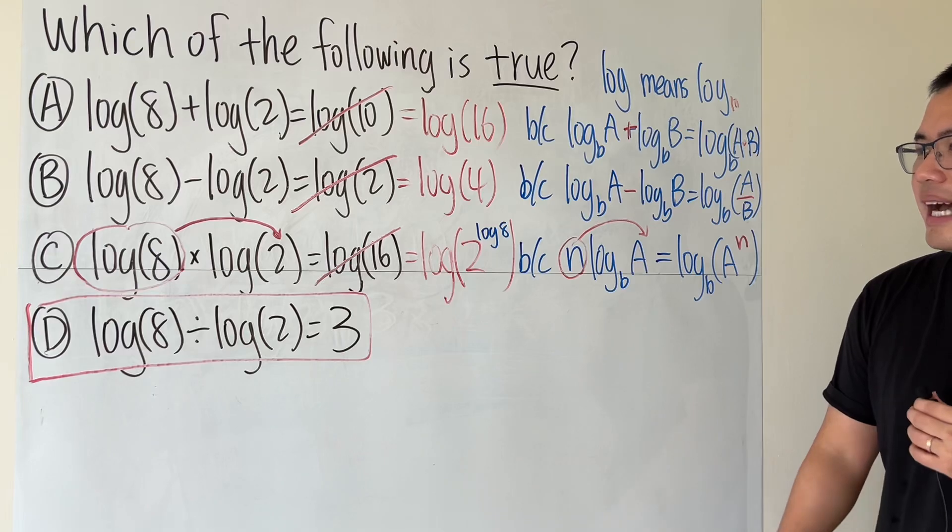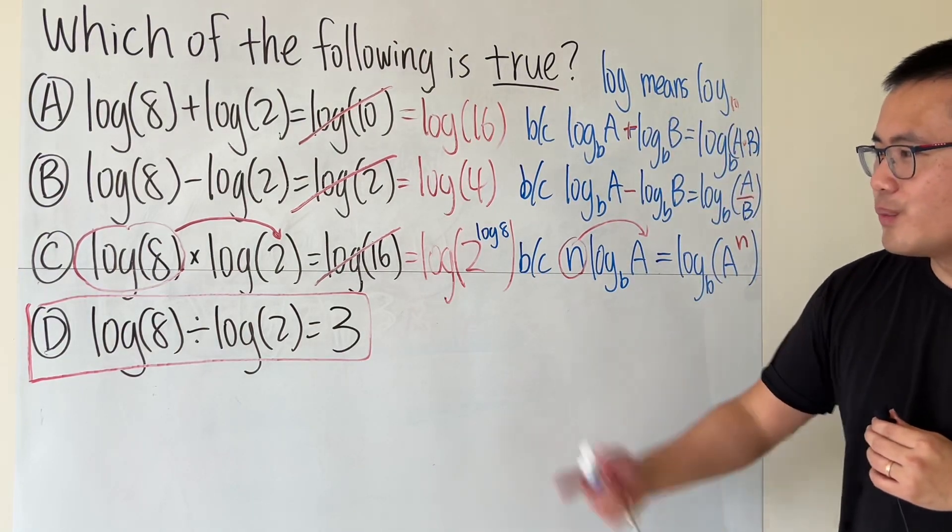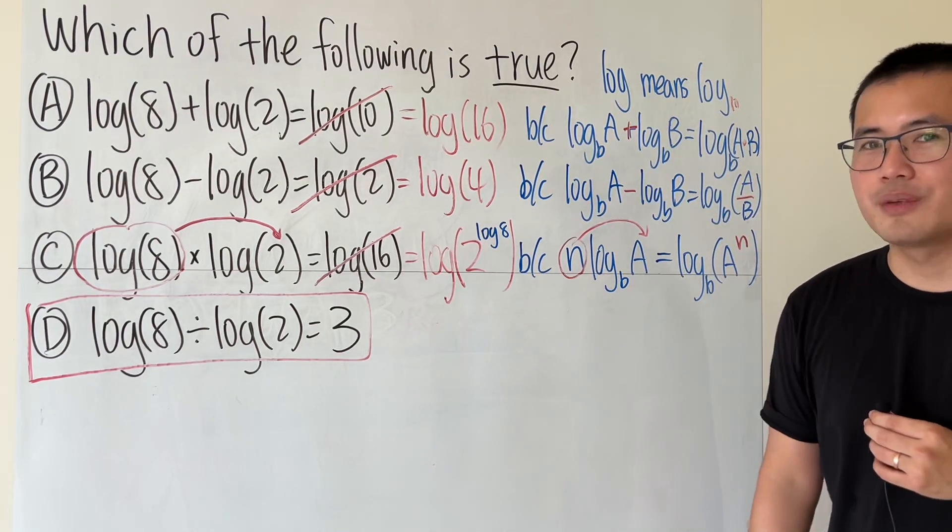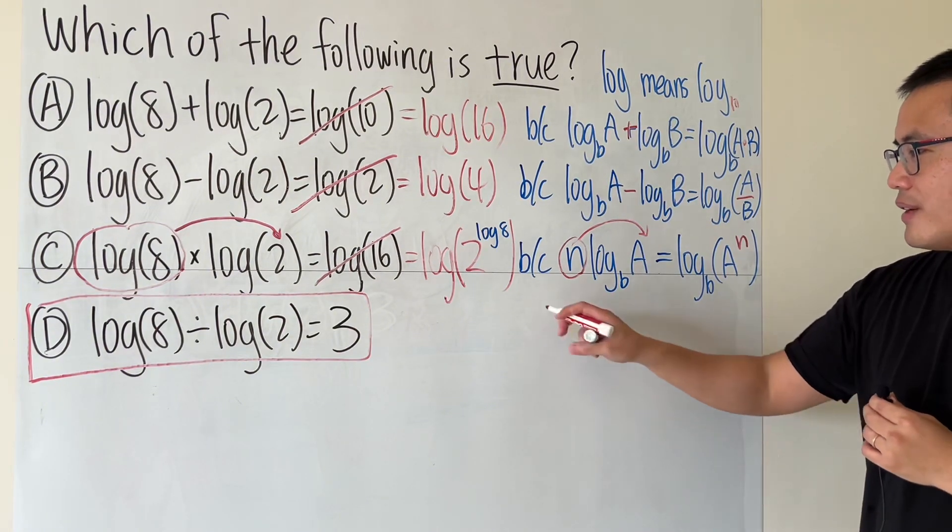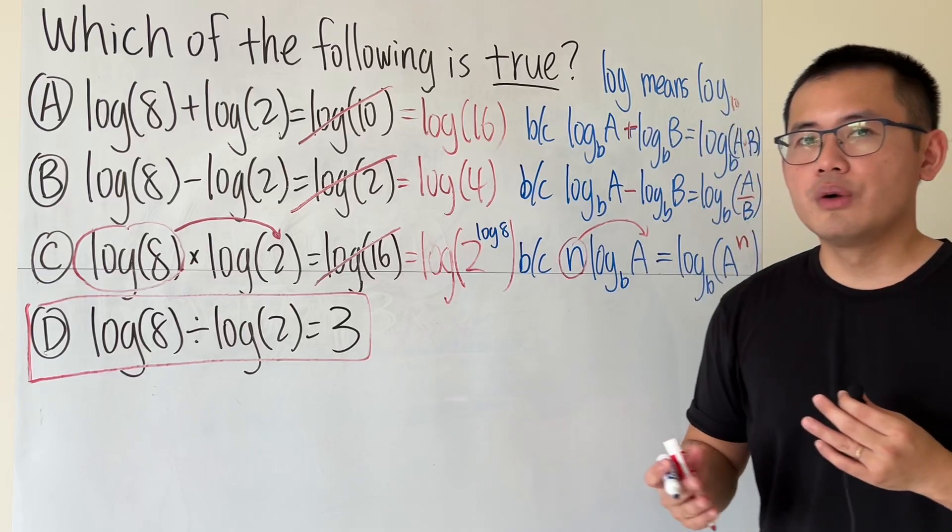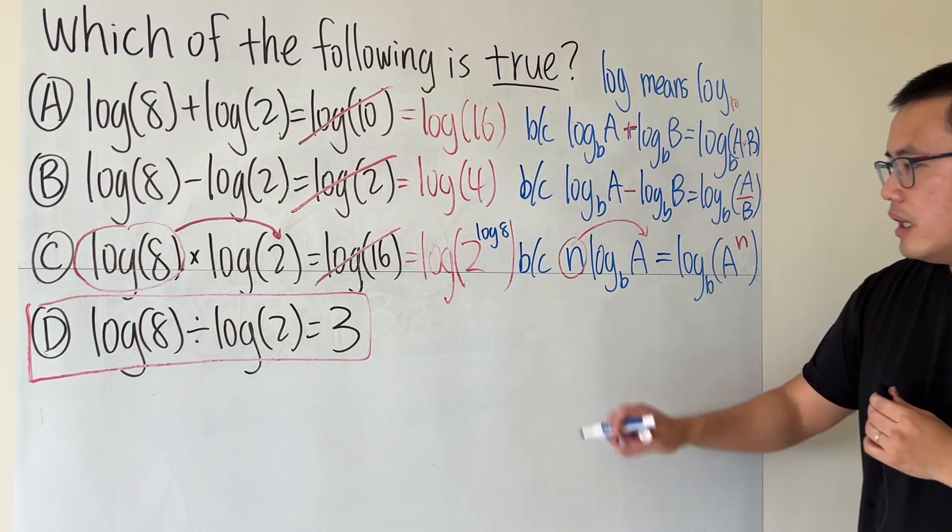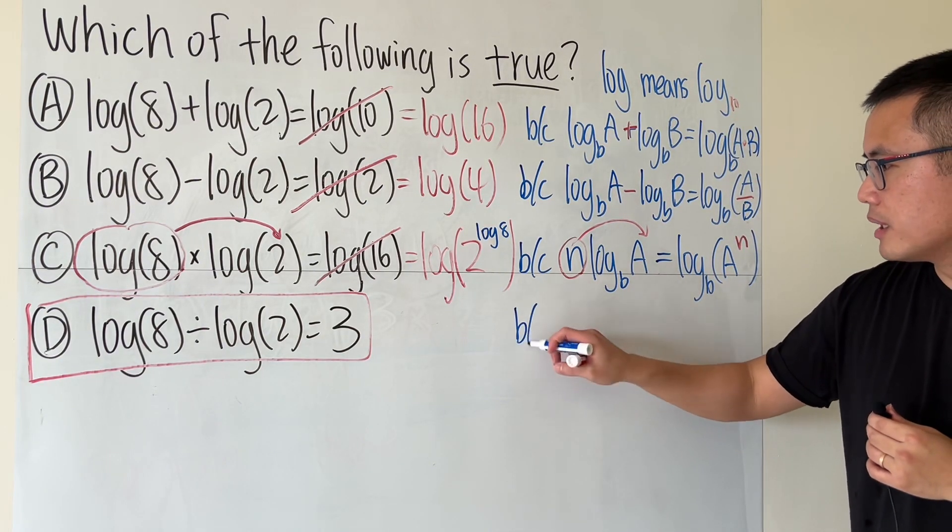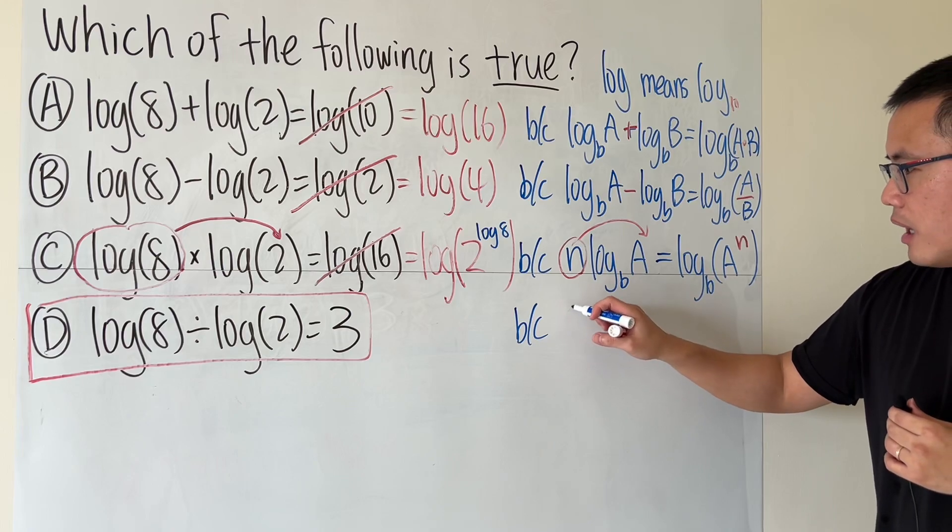Now D. We don't even have log anymore and this is correct. Why? I'll write this down for you guys. When we divide two logarithms, this is called the change of log properties.